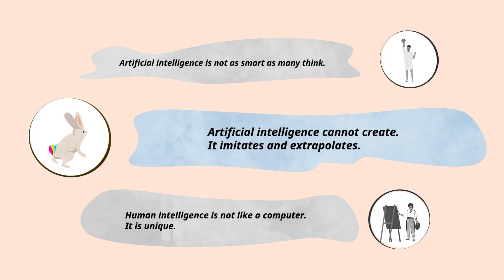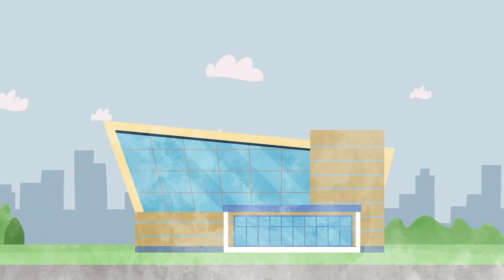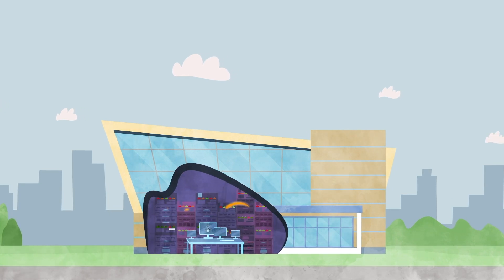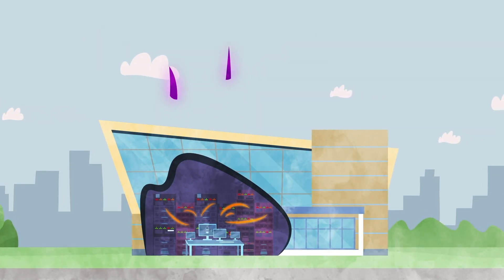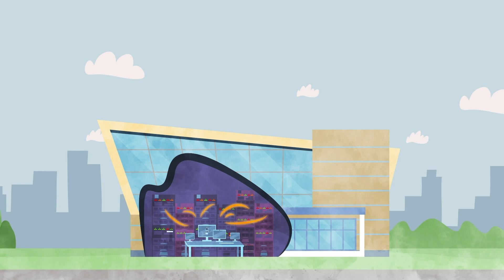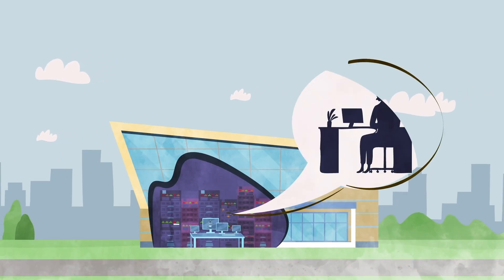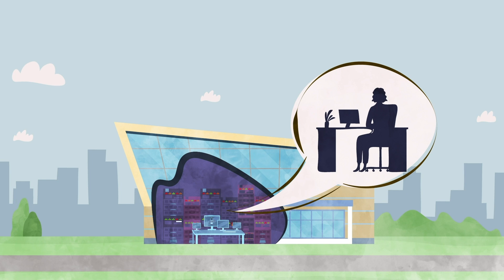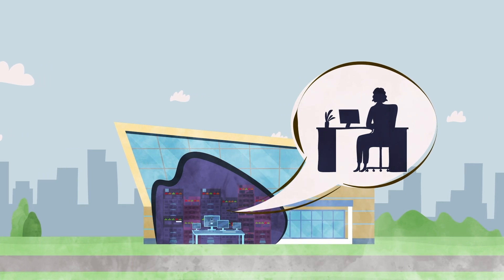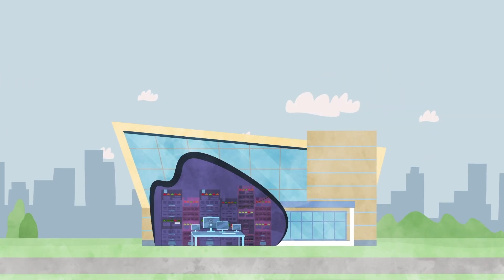Number two. Artificial intelligence cannot create. It imitates and extrapolates. Because so-called machine learning is entirely dependent on the training data it receives, it has no ability to check its models against the real world. Everything generative AI appears to create is a result of what designers feed it or what's available on the internet. This makes chatbots especially vulnerable to error and attacks.